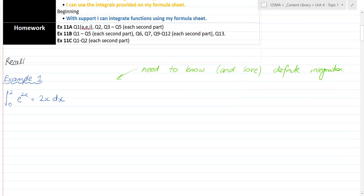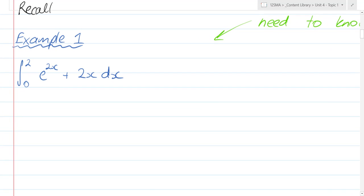Here's some stuff that you already know. Let's do Example 1 and recall how to integrate e^(2x) + 2x dx between the boundaries 2 and 0. Who would like to give me some first steps on this one?